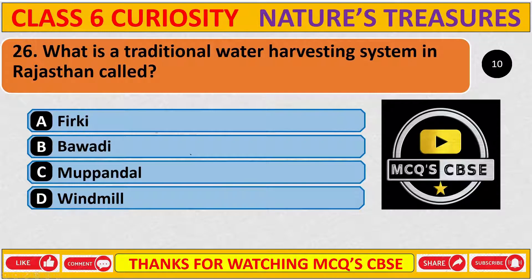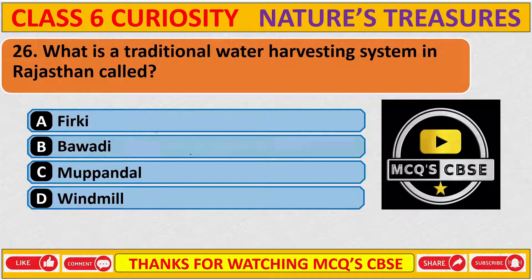What is a traditional water harvesting system in Rajasthan called? The correct answer is B: Bawri.